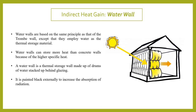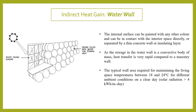The next technique is the water wall. In the Trombe wall, the gap between the glazing and the wall was filled with air; in a water wall, that gap is filled with black cans or black drums in which water is stored. When sunlight strikes the glazing, the water stores the heat and transfers it to the wall. The external surface of the drums is painted black to increase absorption capacity, while the internal surface can be any color.